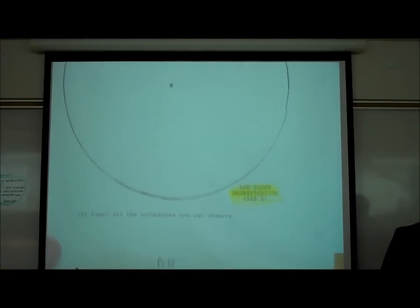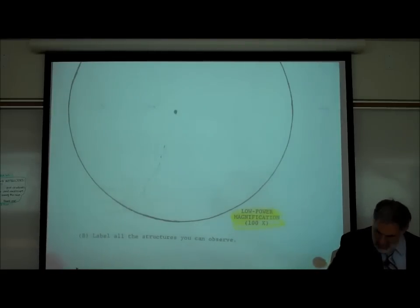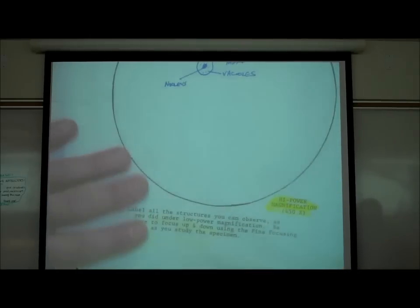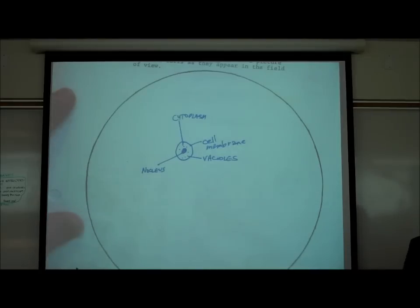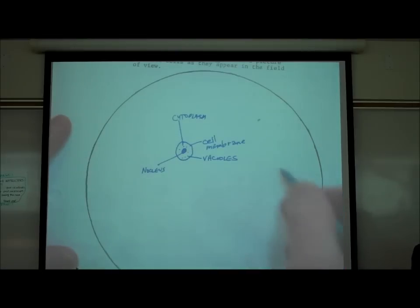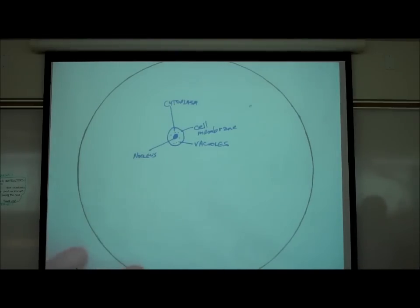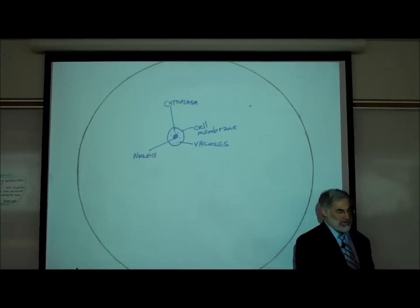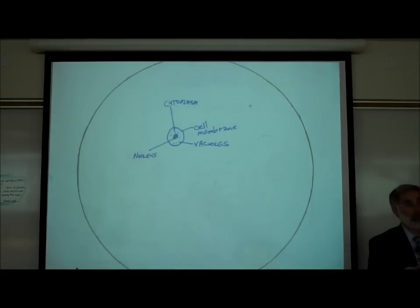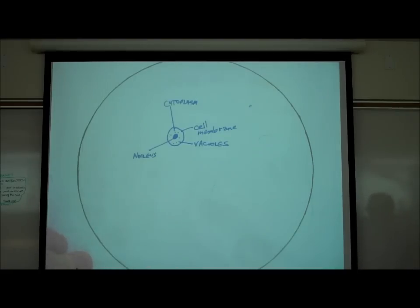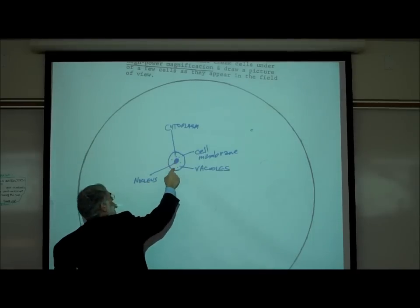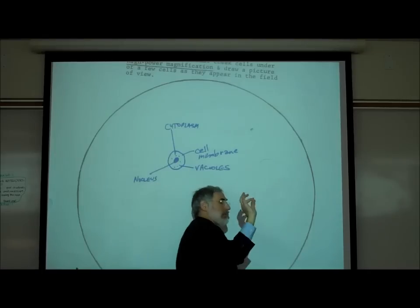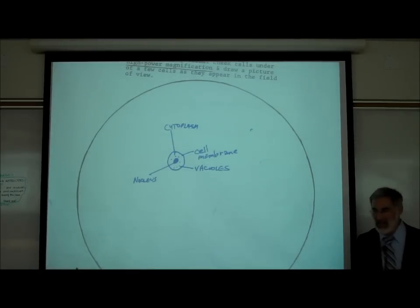On page D12, draw a picture of some cheek cells under low power. On page D13, draw them again under high power. Try to draw the cell relative to the size of the field of view — proportional to what it actually looks like. You don't have to be perfect or an artist, but you're supposed to be a careful observer and draw a representation of what you see. The main things to see under high power are the cell membrane, the cytoplasm, the nucleus, possibly a nucleolus, and little vacuoles or sacs in the cytoplasm.